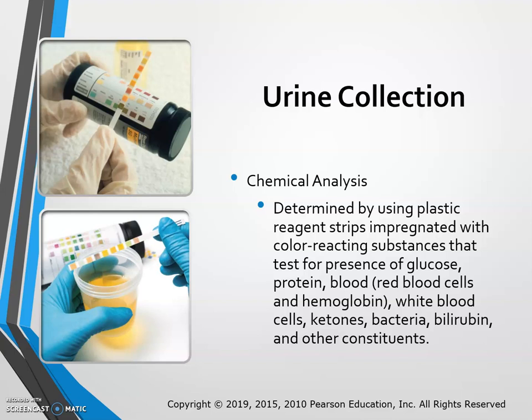Chemical urinalysis — the lab performed in class — is determined using plastic reagent strips impregnated with color-reacting substances. These test for the presence of glucose, protein, blood, red blood cells, hemoglobin, white blood cells, ketones, bacteria, bilirubin, and other constituents. A physician will often order a urine sample on a patient with altered mental status to establish a baseline before drawing blood.